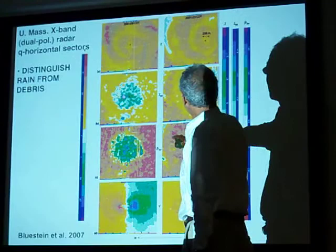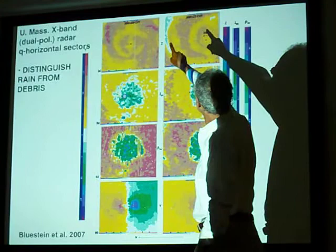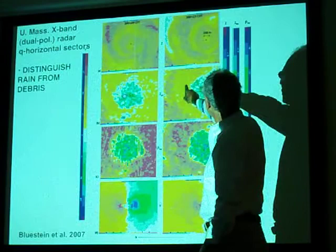This is reflectivity, Z. This is ZDR and rho HV, and there's the vortex signature. We have a concentric circle of high reflectivity, and then spiral bands of high reflectivity.